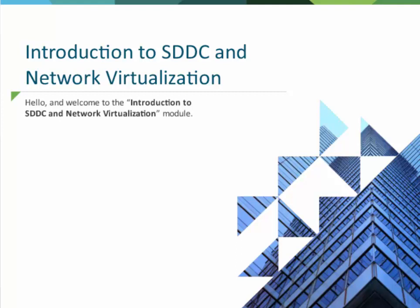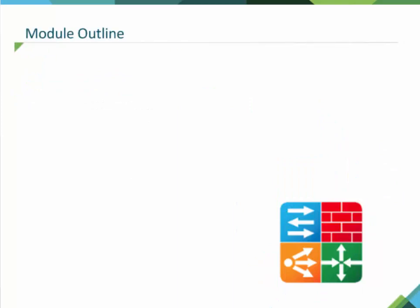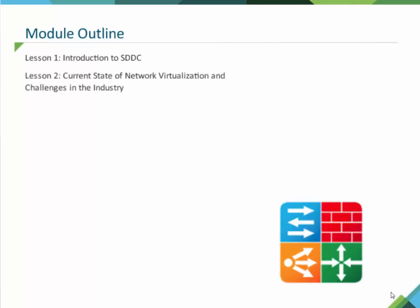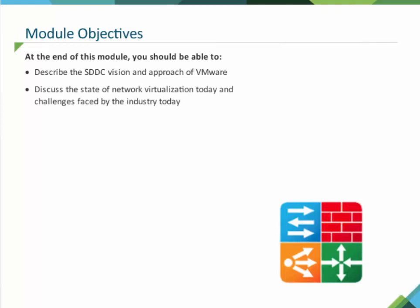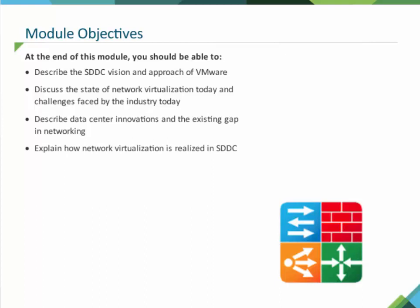Welcome to the Introduction to SDDC and Network Virtualization module. This module includes three lessons: Lesson 1, Introduction to SDDC; Lesson 2, Current State of Network Virtualization and Challenges in the Industry; and Lesson 3, Network Virtualization Overview. At the end of this module, you should be able to describe the SDDC vision and approach of VMware, discuss the state of network virtualization today and challenges faced by the industry, describe data center innovations and the existing gap in networking, and explain how network virtualization is realized in SDDC.